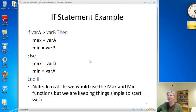Let's look at a simple example. Here we're going to use a conditional to set a variable called max to be the larger of two values and min to be the smaller. If varA is greater than varB, then max equals varA and min equals varB. Else, max equals varB and min equals varA. In real life we would use the Max and Min functions, but we're keeping things simple to start with.